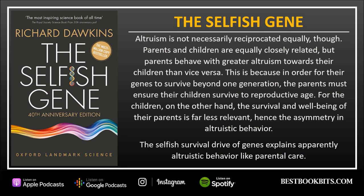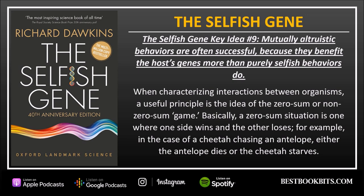Altruism is not necessarily reciprocated equally, though. Parents and children are equally closely related, but parents behave with greater altruism towards their children than vice versa. This is because in order for their genes to survive beyond one generation, the parent must ensure their children survive to reproductive age. For the children, on the other hand, the survival and well-being of their parents is far less relevant — hence the asymmetry in altruistic behavior.